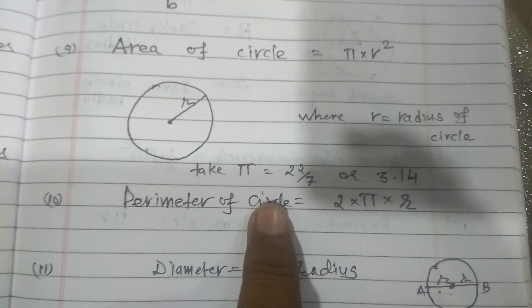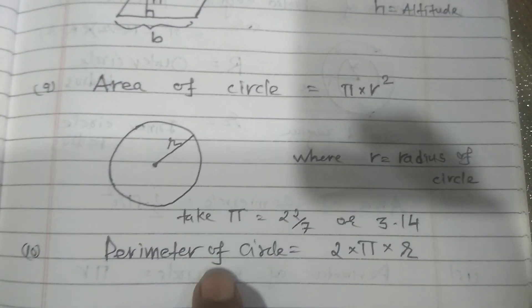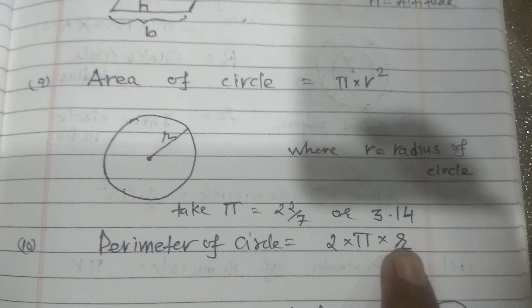Now perimeter of circle. Perimeter of circle is equal to 2 pi R.